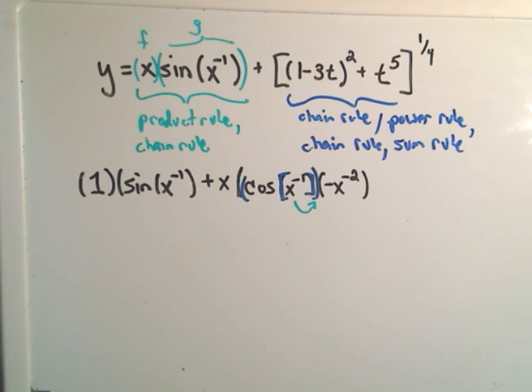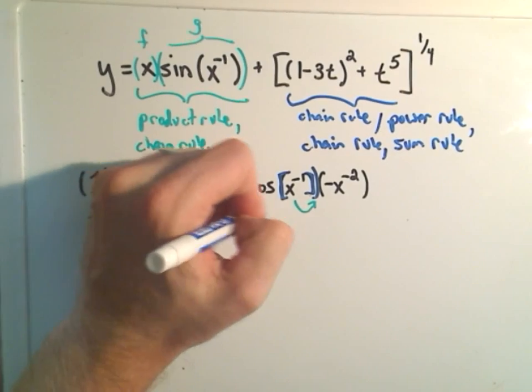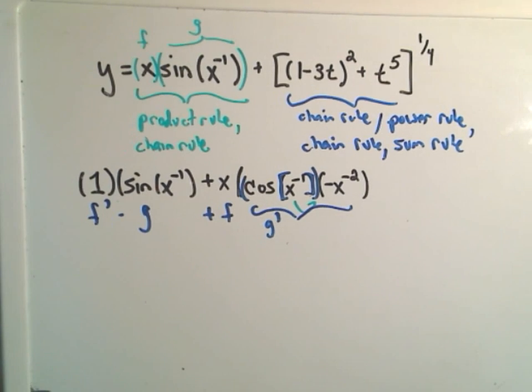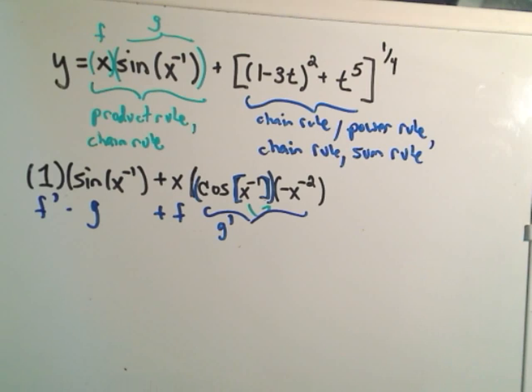So, we'll kind of separate it out. And again, notice what we have here. This is our f prime times g plus f. And now, all of this stuff is our g prime by the good old chain rule. Okay? And we'll come back and clean that up in a second.